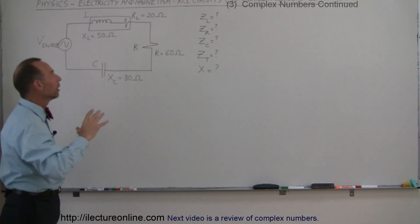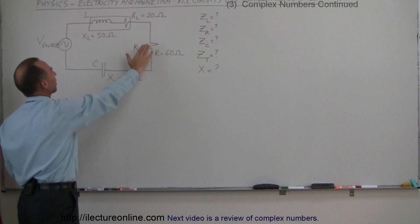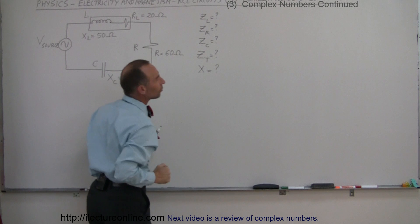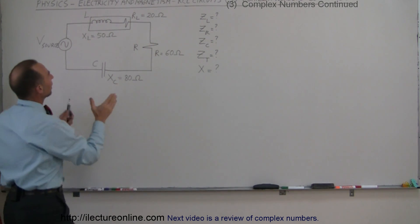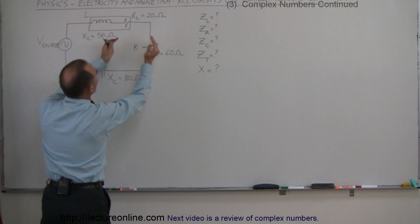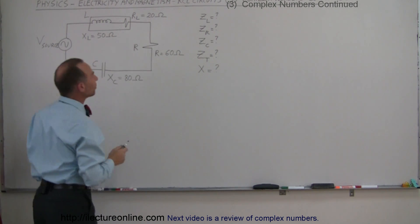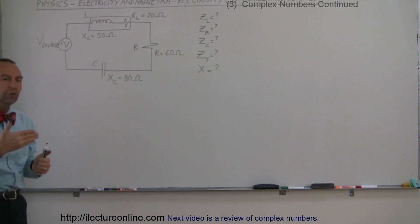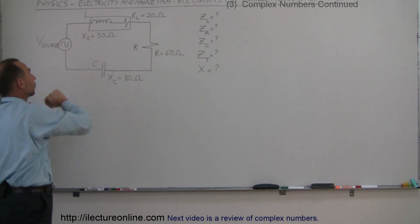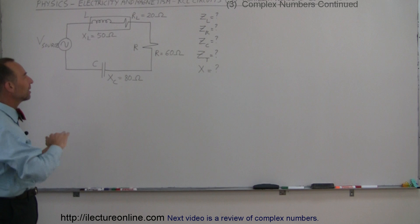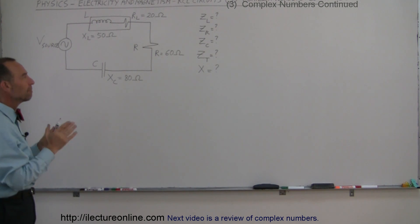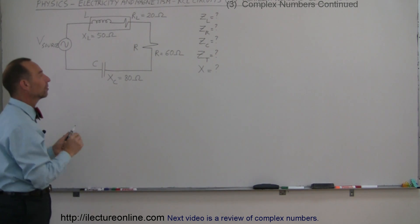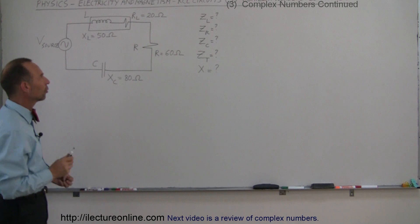They will have an overall opposition to the current which is called impedance, so we're going to find the impedance of the circuit. To do that, we're going to find the impedance of each of the three components: the inductor including its resistance, the resistor, and the capacitor. Because they oppose the current at different times in the phase of the oscillating voltage, we have to use a real and imaginary part to express the reactance and impedance in each case.